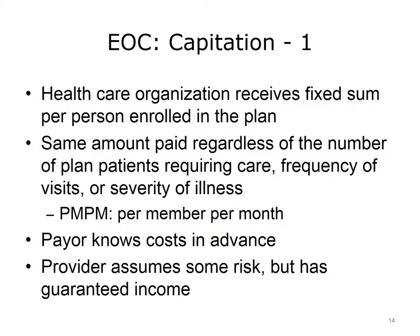The provider or healthcare organization receives the same amount from the third-party payer per length of time, usually a month, for the care provided to all of its members. Regardless of the number of patients enrolled, the frequency of their visits, or the severity of illness, the provider receives a preset amount per enrolled patient each month. The term used to describe this is per member per month, or PMPM. The advantage for the payer is knowing total costs in advance, while the advantage to the provider is a guaranteed stream of payments.